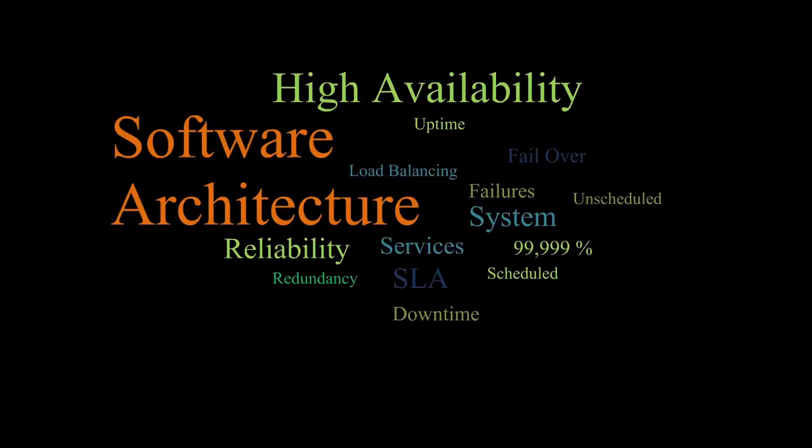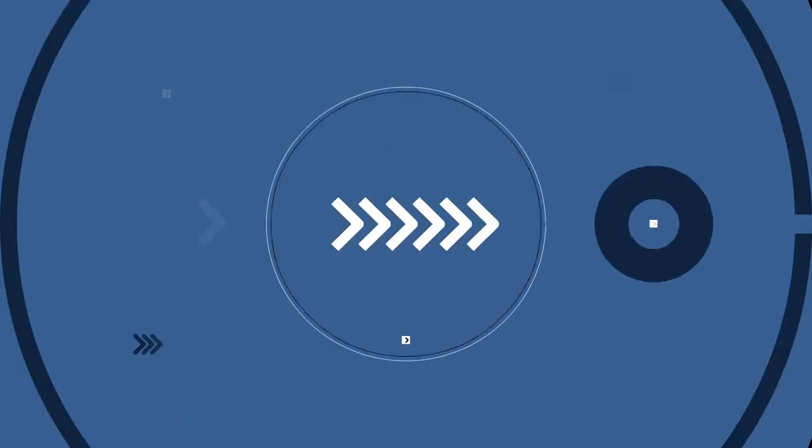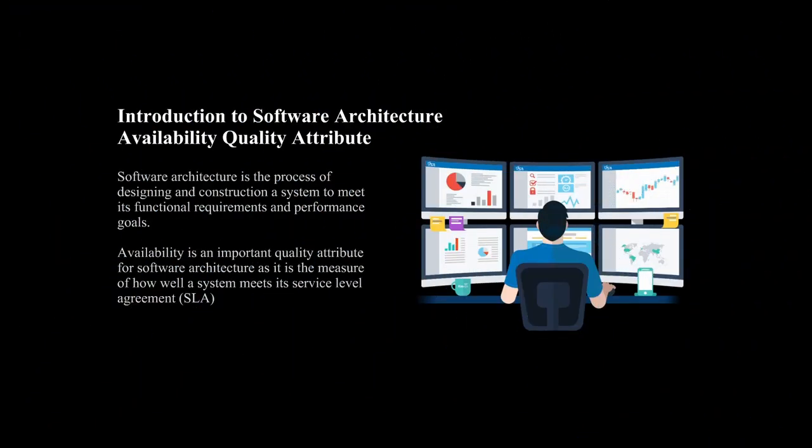Simply put, what is the definition of software architecture? The link to the video where I go into greater detail is provided in the video's description. It is the blueprint of a program or application. It specifies the system's parts, how they connect, and the design principles that underpin the whole. It is important to know how a software system will work, run, and be maintained in order to understand its overall structure and design.